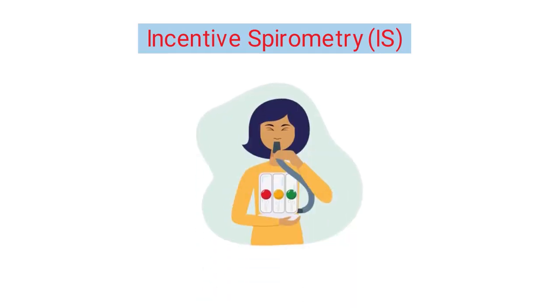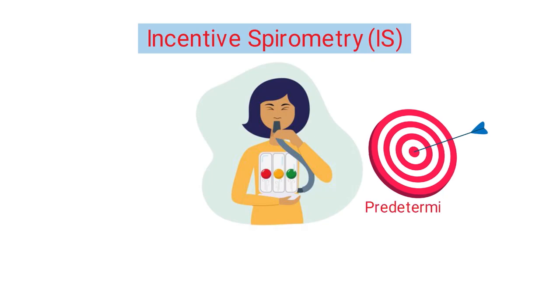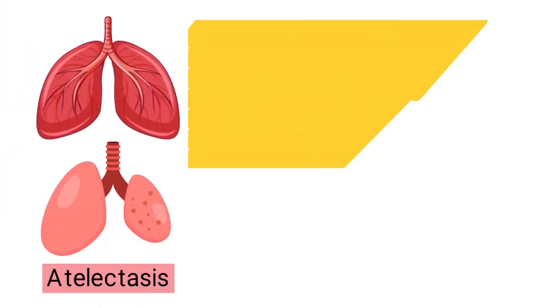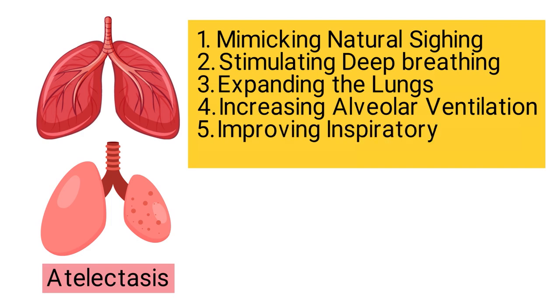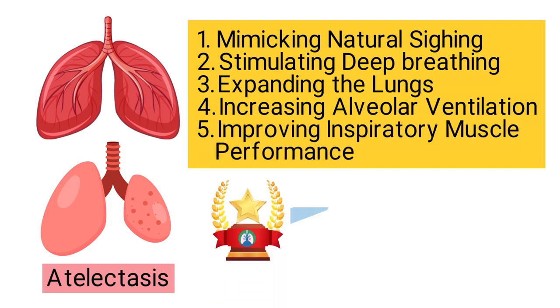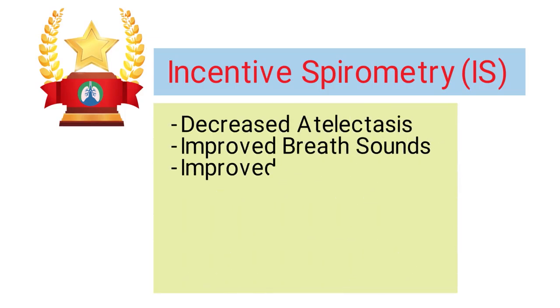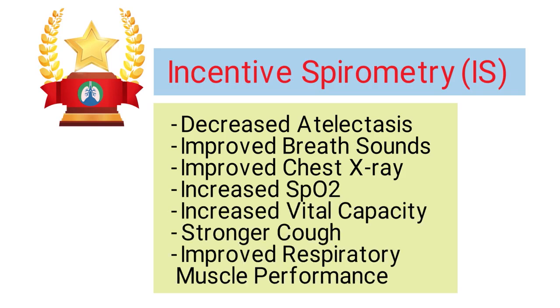The next type is incentive spirometry, a technique in which patients use a handheld device to take sustained maximum inspirations. The goal is to reach a predetermined volume of air initially set by the respiratory therapist. This technique can improve lung function and prevent atelectasis by mimicking natural sighing, stimulating deep breathing, expanding the lungs, increasing alveolar ventilation, and improving inspiratory muscle performance. Potential outcomes include decreased atelectasis, improved breath sounds, improved chest X-ray, increased SpO2, increased vital capacity, a stronger cough, and improved respiratory muscle performance.